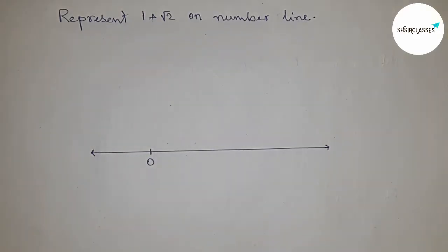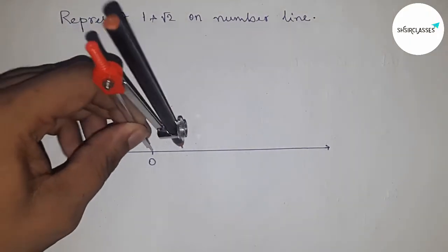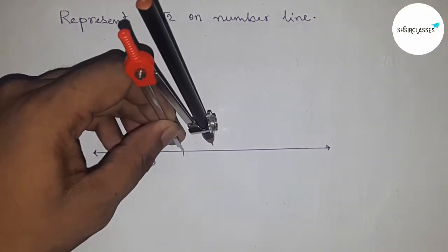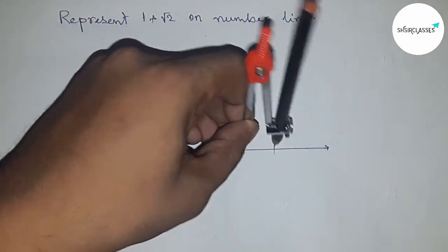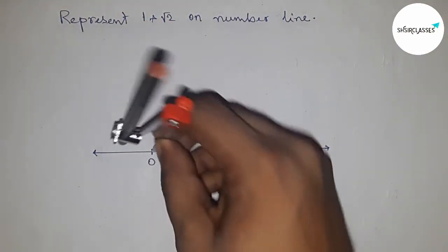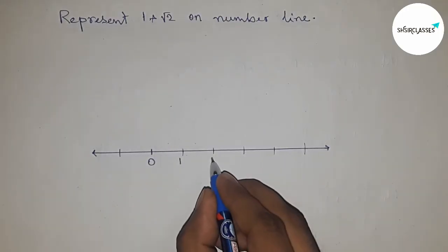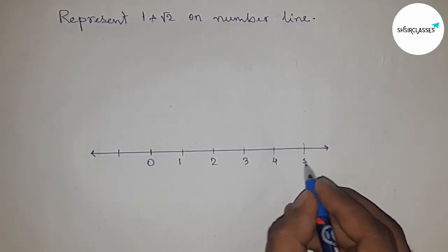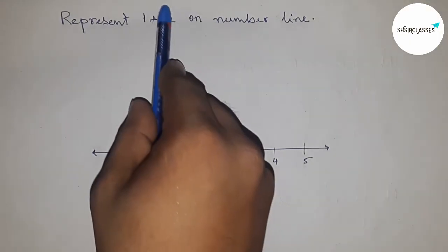If you want to use a scale, you can mark all the numbers that way. Or you can use a compass - I'm going to use a compass, taking any length as the unit length, and mark the line this way. All lengths are the same: this is 1, 2, 3, 4, 5, and this side is -1.